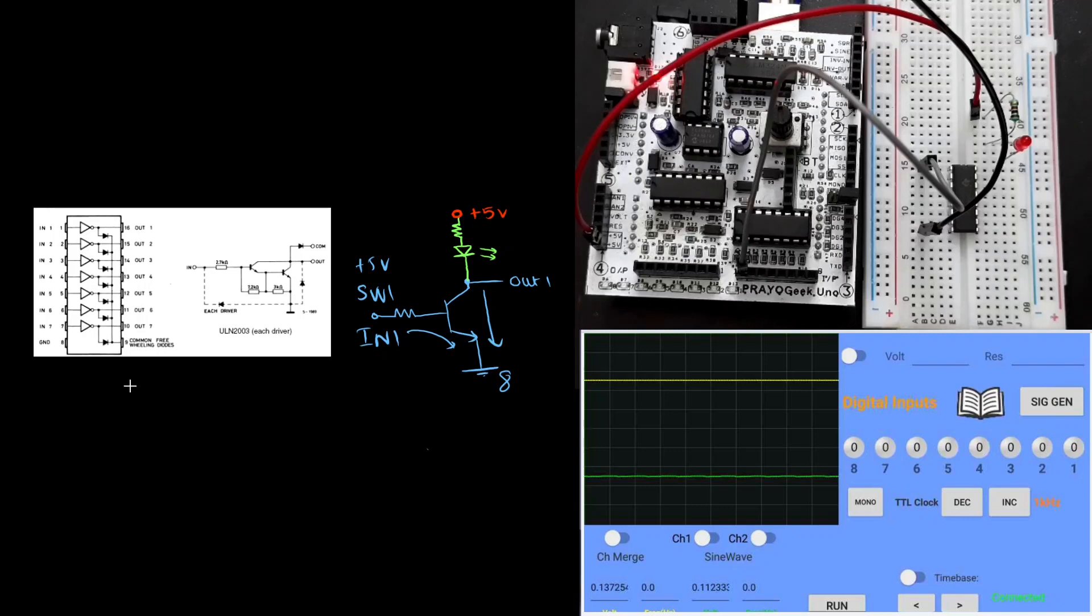Going ahead, apart from this LED driver, we'll also be looking at how we can control a relay, motor, or even a solenoid. Usually loads like the relay, motor, or solenoid are called inductive loads. We'll see how pin number 9 will come into picture when we are using an inductive load. All these discussions will be in the next video.